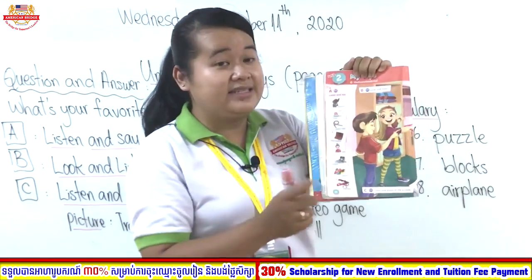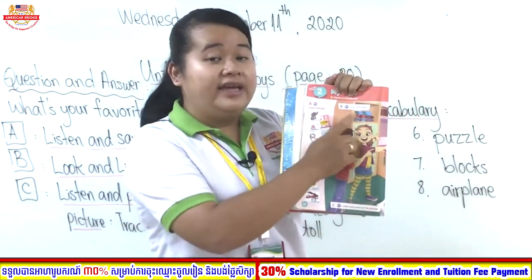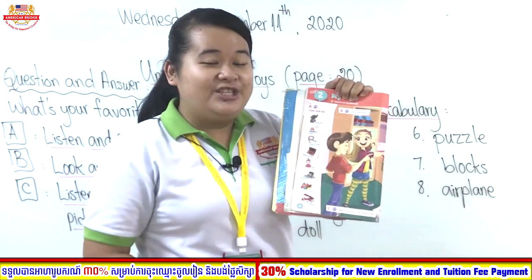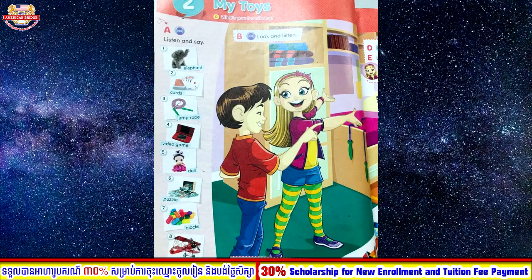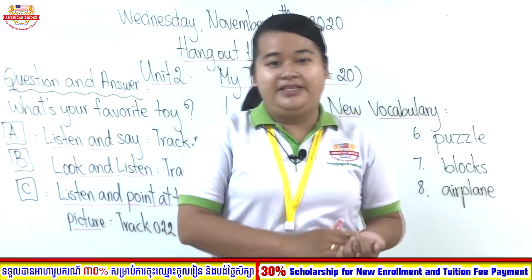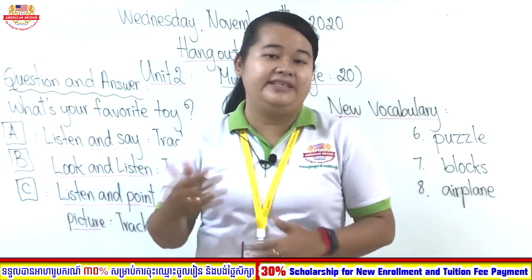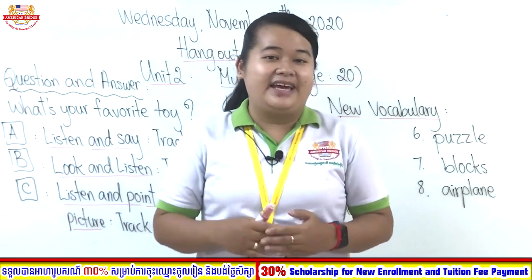Now let's move to Exercise B on page 20: Look and Listen. Let's listen together. 'It is my room. Do you want to see my toys? Look, it is my video game — it's fun. It is an airplane, it can fly. And look, they are dolls. Do you like them? You'll like this — it's a jump rope. Do you want to play? Let's go outside.' You finished listening — we talked about my toys.